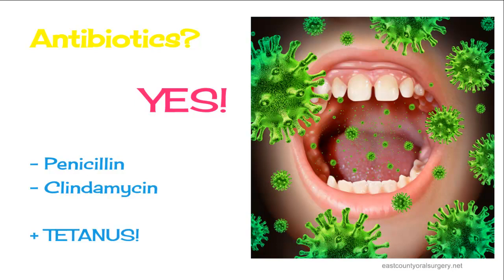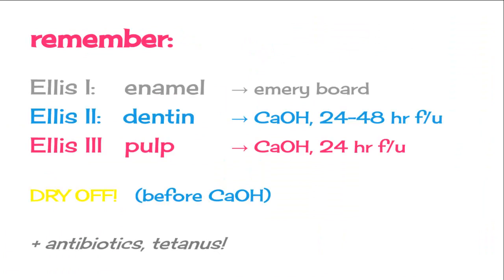Three things to remember for dental fractures: LS1 is just the enamel — use an emery board to file off the edge. LS2 and LS3 are more serious — follow up with the dentist and apply calcium hydroxide paste. LS2 means it went down to the dentin; LS3 means you see a red dot or bleeding, meaning it went all the way to the pulp. Make sure the tooth is dry before placing calcium hydroxide. Don't forget antibiotics and tetanus. Thanks again for joining us on EM in 5.